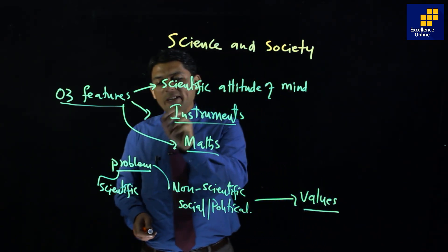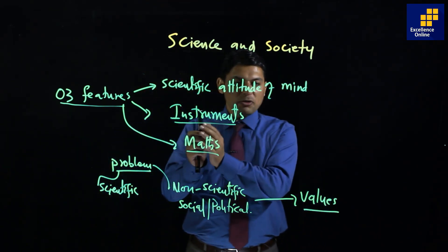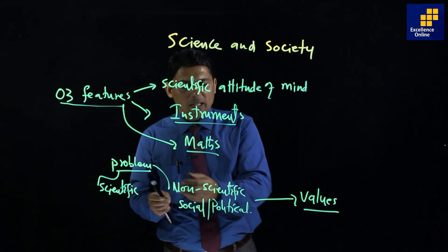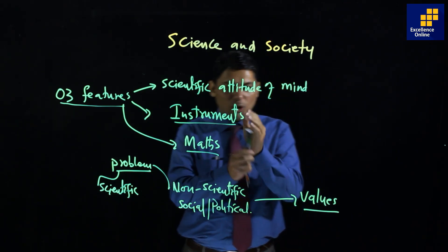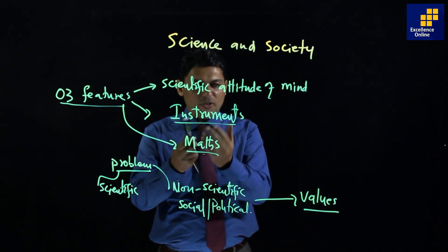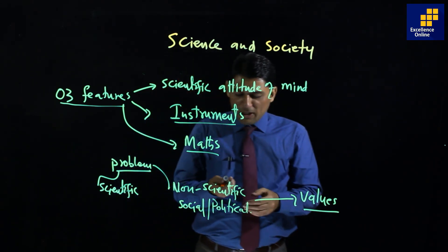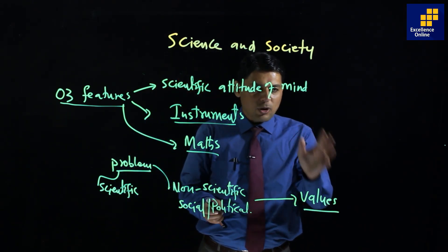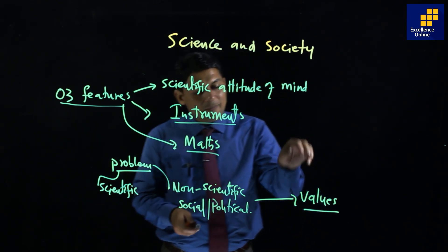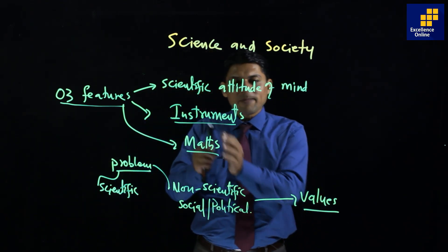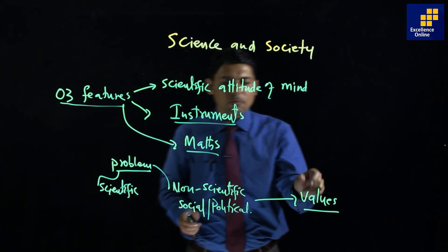Apart from the scientific approach, new generations must also have values to be a good doctor, a good engineer, and a good human. Some people are philanthropists because of their values. Apart from science, you also have to study and discuss values.